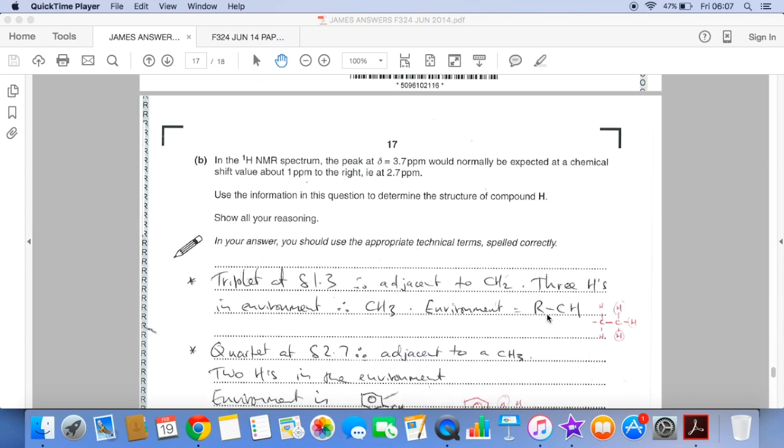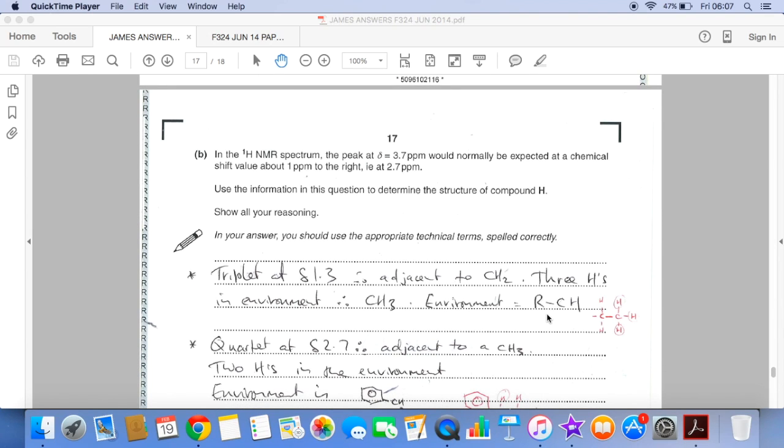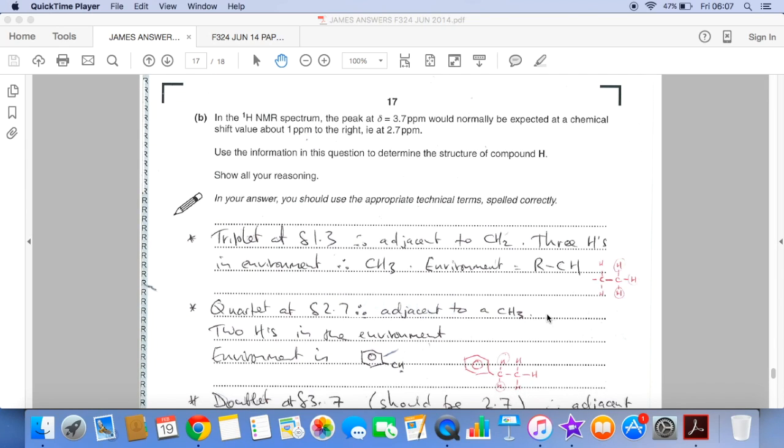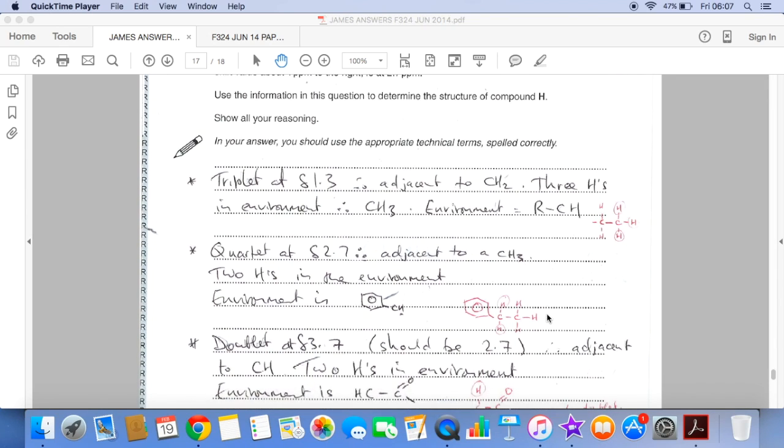So the structure now. So remember we have to use the appropriate technical terms spelled correctly. So starting at the right hand side, we've got the triplet at delta 1.3. So the fact that it's a triplet must mean there's an adjacent CH2 group. We know there are three hydrogens in the environment because its area is three. So it must be a CH3 that's bonded to a CH2.